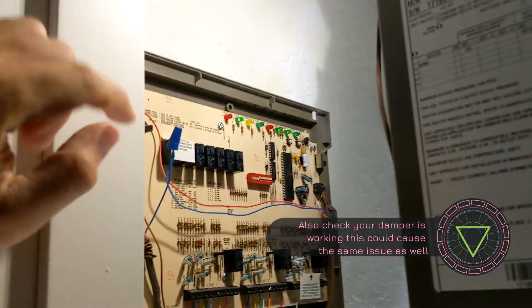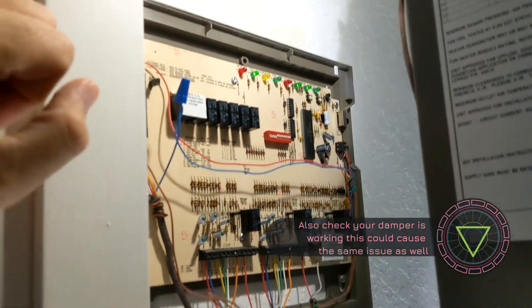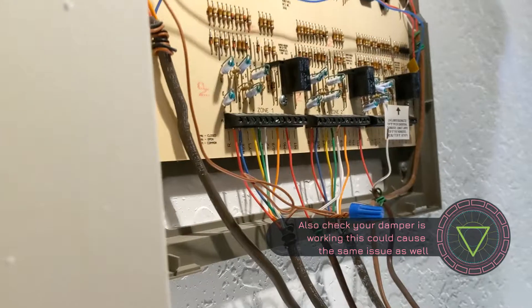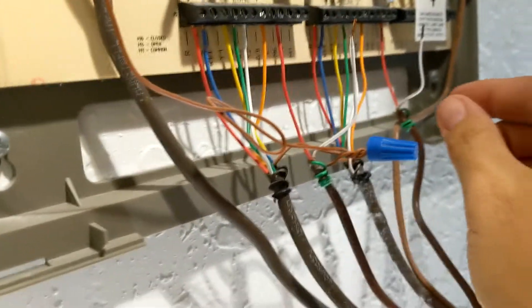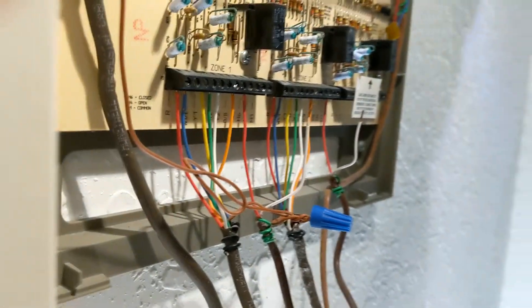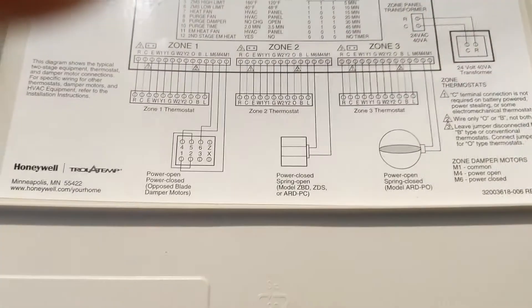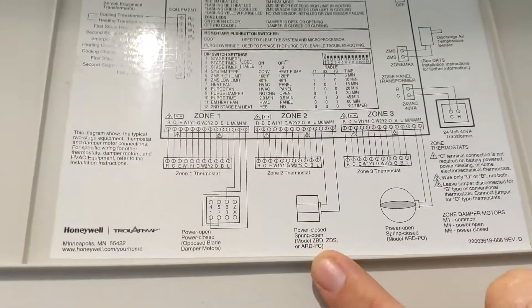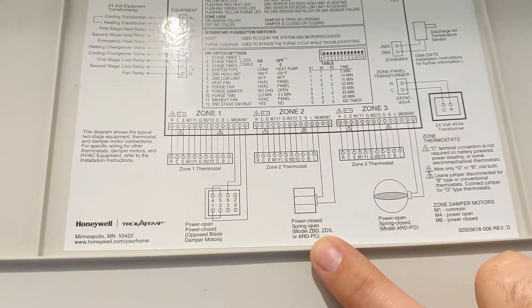But it would not open the dampers for zone two. So what I did to bypass this was go to zone two and disconnect the power to the damper. For this particular unit, not every unit, but on here you can see it reads right here where it says 'power close, spring open.'